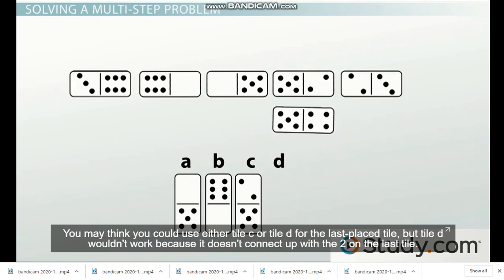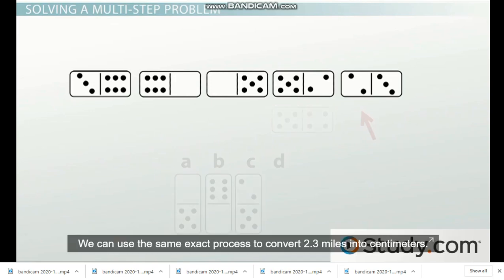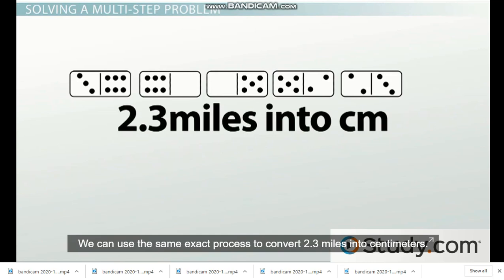You may think you could use either tile C or tile D for the last placed tile, but tile D wouldn't work because it doesn't connect up with the two on the last tile. We can use this same exact process to convert 2.3 miles into centimeters.